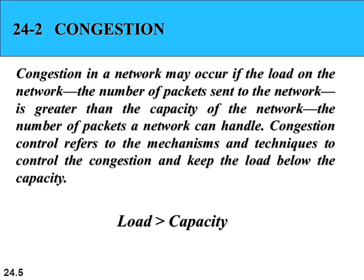Congestion occurs in the network when the number of packets being transmitted by nodes to the network is more than the number of packets the network can handle. The number of packets sent to the network is called load, and the number of packets the network can process is called the capacity of the network. If the load is more than the capacity, congestion has occurred, and the network will start discarding packets. We need congestion control mechanisms to prevent congestion or detect and remove it.